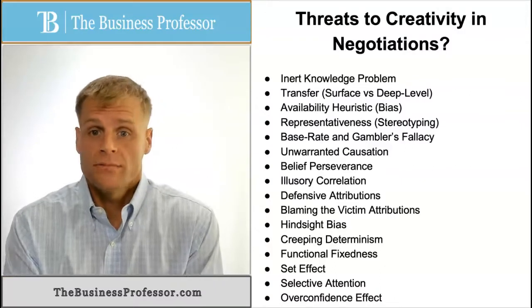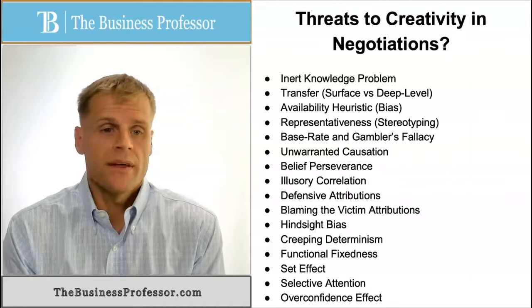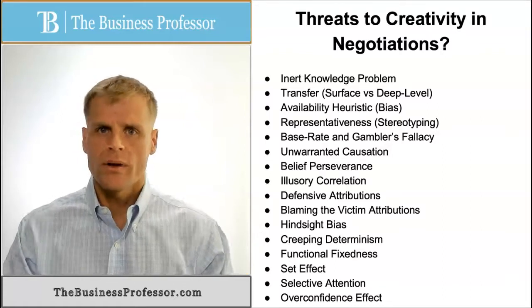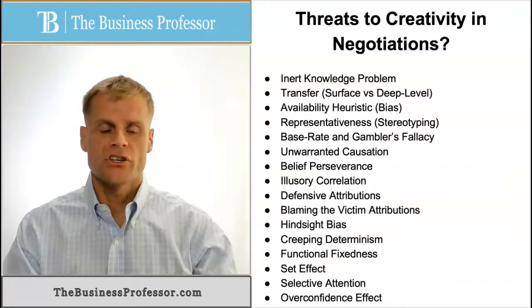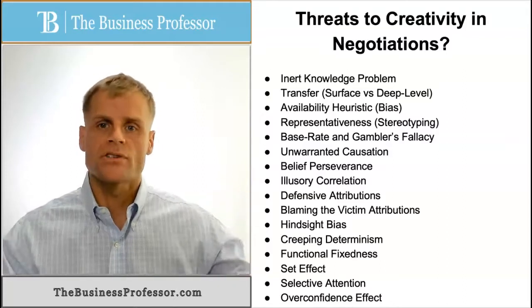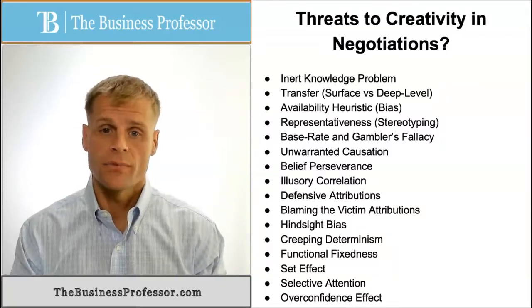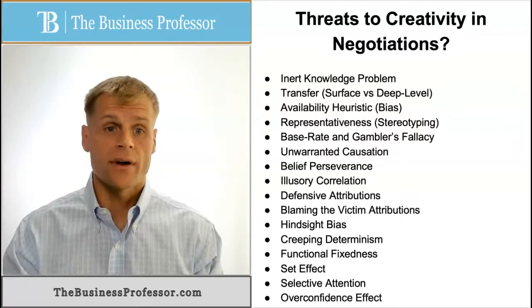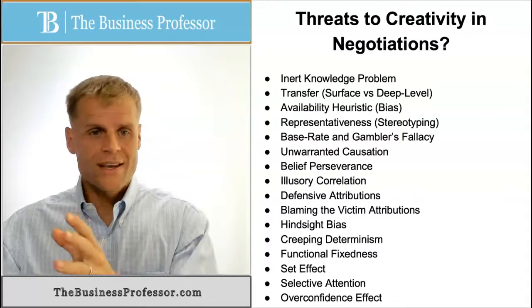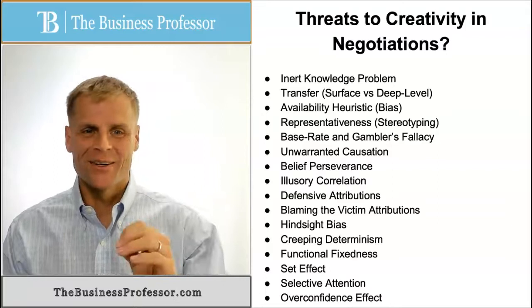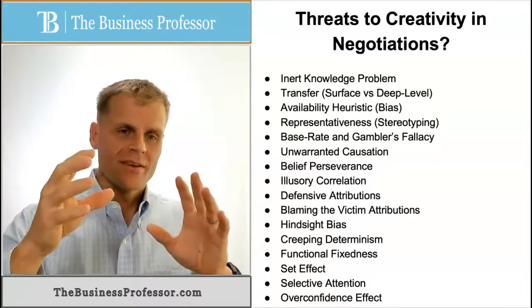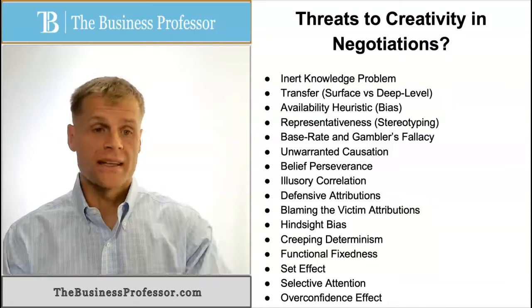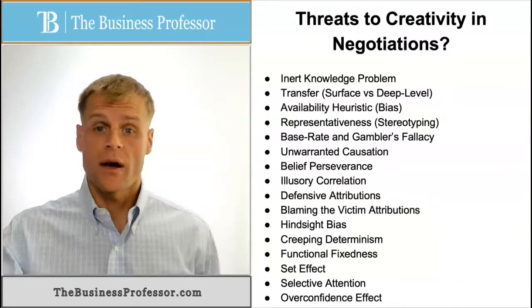Unwarranted causation is when you believe that one situation, scenario, or characteristic is the cause of a given outcome, when oftentimes it's the combination of a given context or scenario that causes an outcome. Attributing causation wrongfully causes you to think this cause will always result in this outcome — this input will always result in this output — when that's not always the case. Because you're wrongfully attributing that causation, you don't think outside the box more broadly.